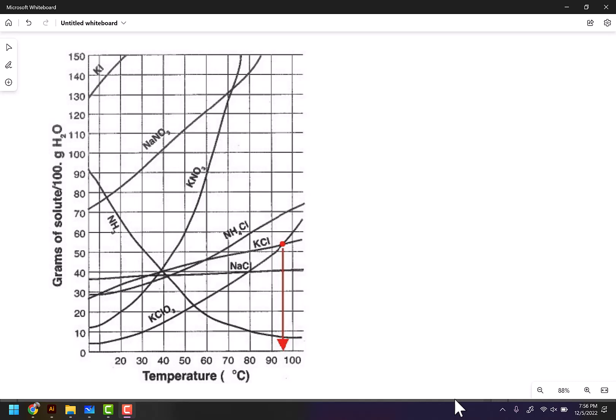A solubility curve is nothing more than a graph of different substances and how much they dissolve in water. I'm going to show you two things. Number one, notice that along the y-axis here it says grams of solute per 100 grams of water.